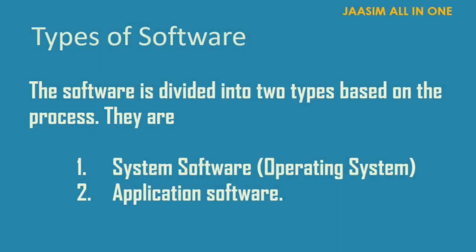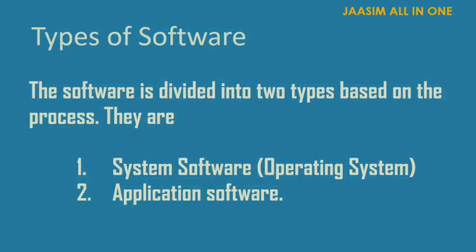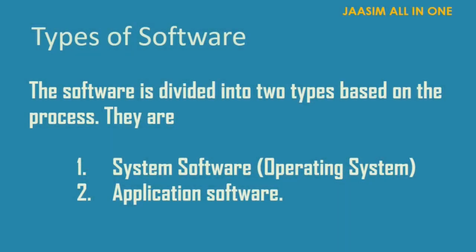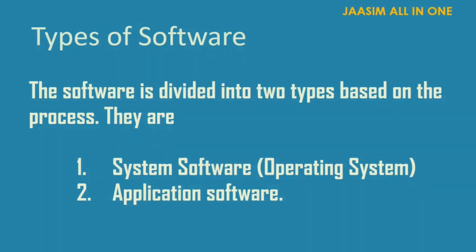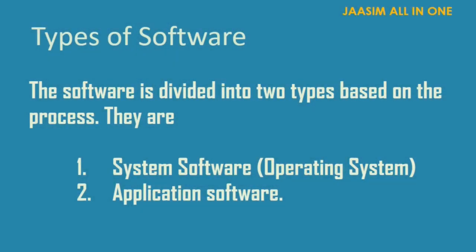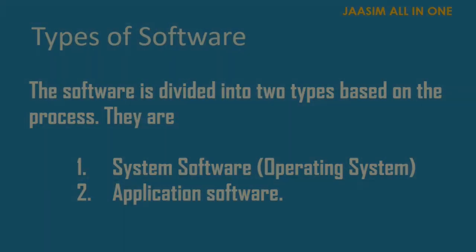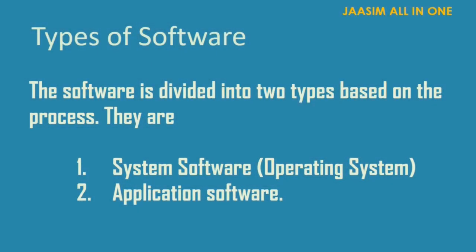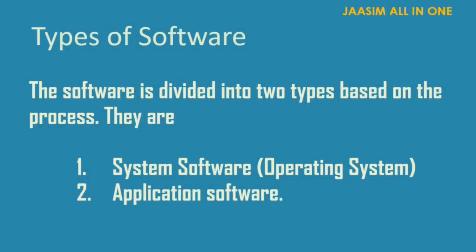Types of software: Software is divided into two types — system software and application software. System software is otherwise known as operating system, simply called OS. Examples of operating systems include Unix, Linux, Windows, DOS, and Mac OS.